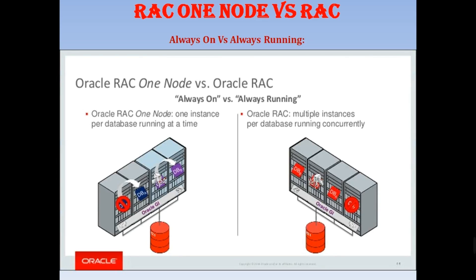Here is the RAC versus RAC One Node diagram architecture. RAC is always on and always running; RAC One Node is always on but not always running. With RAC One Node, one instance per database is running at a time, but in RAC multiple instances per database run concurrently.